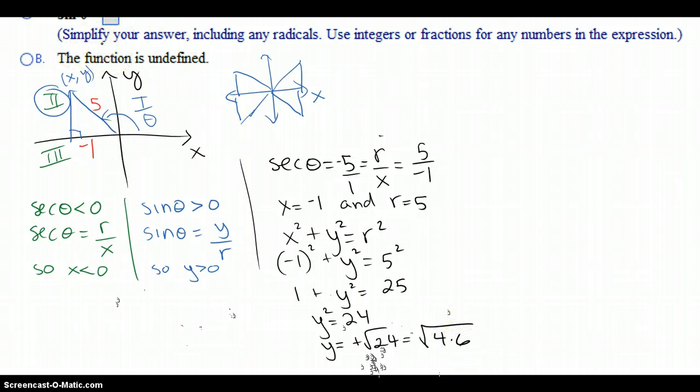You learn in algebra that any time you have a perfect square, that you should take it out. And that's the answer they're expecting. So you always need to read in parentheses. And they do not want a decimal, by the way, because it says including any radicals, use integers or fractions for any number in the expression. But anyways, 24 is 4 times 6, and 4 is a perfect square, so this can be written as 2 square root of 6, because you can use the square root property, and square root of 4 is 2.